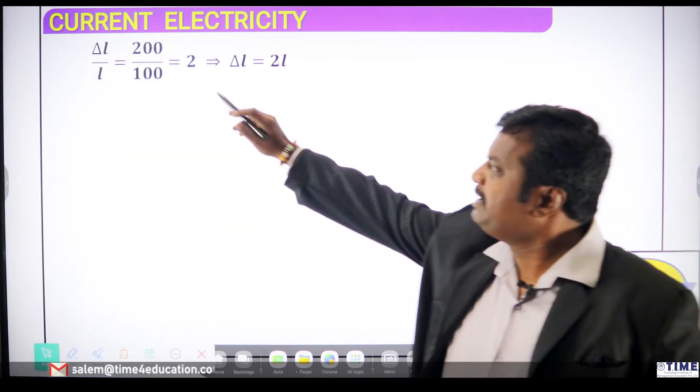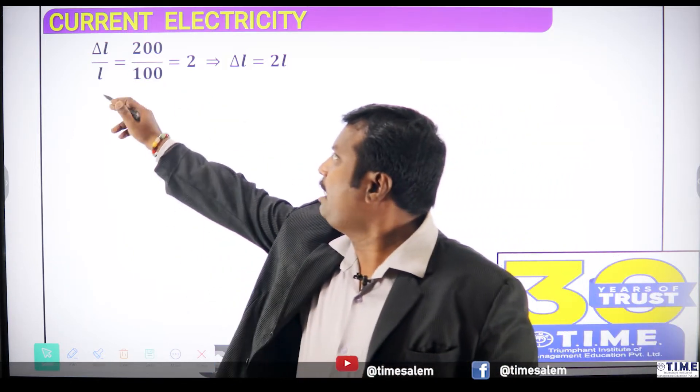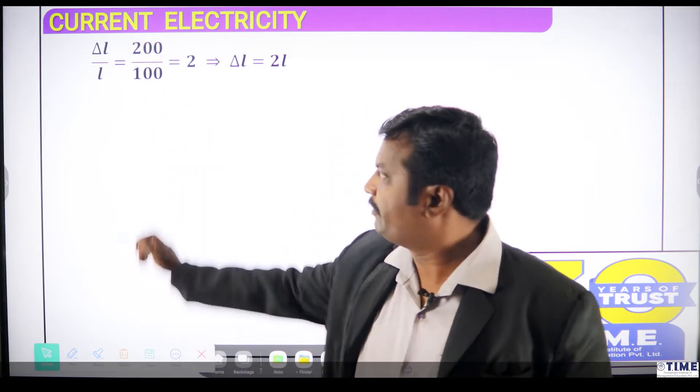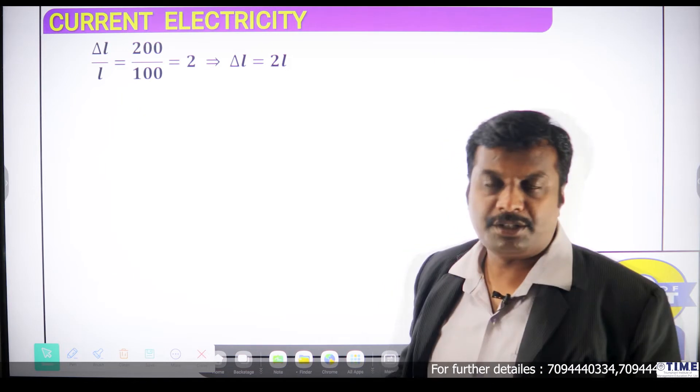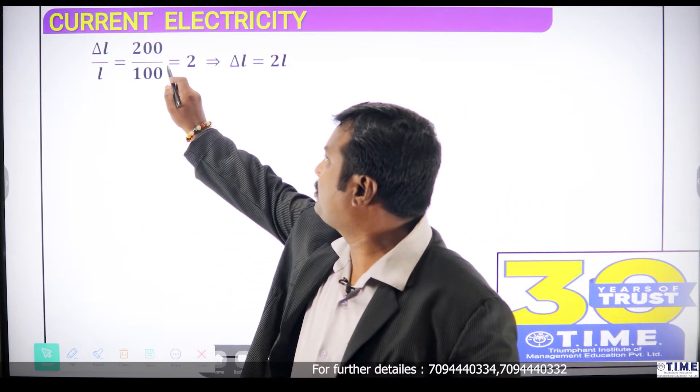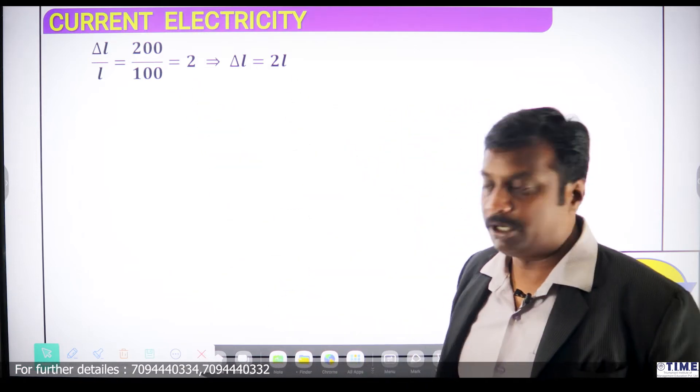Now, let us see difference in length. They have said that the difference in length has increased by 200 percent. Del L by L is 200 by 100. Del L is 200 and L is 100. Zeros will get cancelled. It will become del L by L is 2 or del L value is 2L.